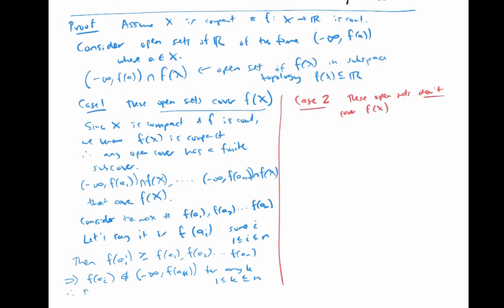But that means that this finite subcollection, in fact, doesn't cover f of x, because it's leaving out the point f of a sub i. That is a contradiction. So case one doesn't work.